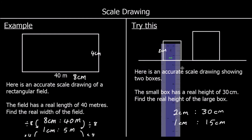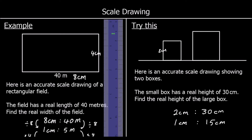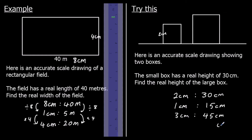The second box is 3 cm tall on the drawing. Every 1 cm is 15 cm in real life, so 3 times 15 cm makes 45 cm. So the box is 45 cm tall in real life.